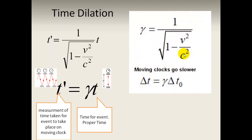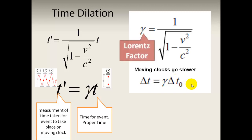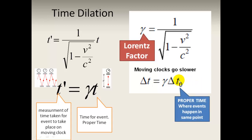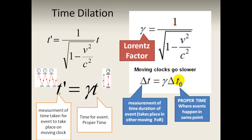In the data booklet you have these two equations. Delta T, the time of an event, equals gamma times T-naught, where T-naught is the proper time. You multiply by a factor gamma which is always greater than 1 — so a 3-minute event in a moving frame of reference is observed as a 5-minute event. Gamma is the Lorentz factor. Proper time is where the beginning and ending of the event — like making a sandwich — happen at the same point.